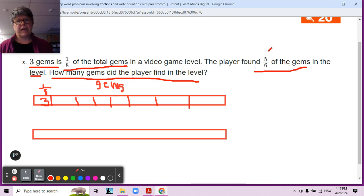The player found five-sixths of the gems in the level. So in the next one, let's show five-sixths. One, two, three, four, five lines makes six parts, and they found five of the sixths, right? So five-sixths. Make sure you're copying this down. Five-sixths.